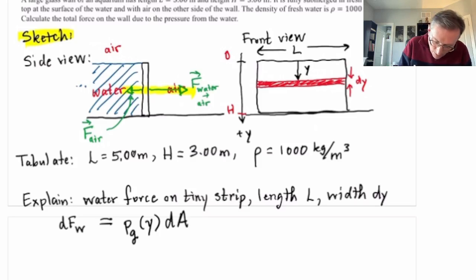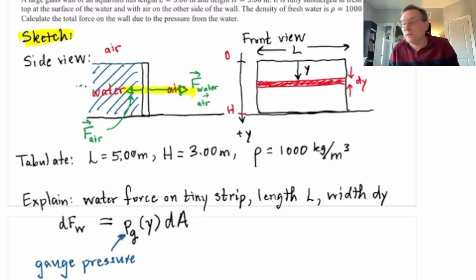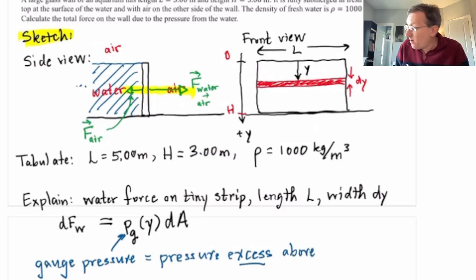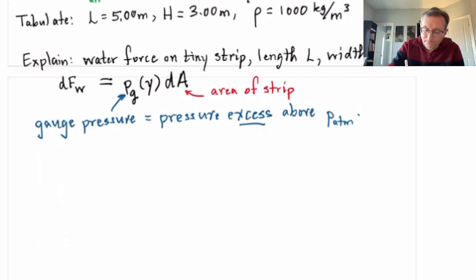Now I need to say some things about that. So that notation p_g is called the gauge pressure. You can think of that as the pressure excess above atmospheric. And of course, the dA is the area of that tiny strip that I've drawn in red. Now, how do I think about this gauge pressure from the water? Well, here's what we know about calculating pressure with depth in a fluid. This is from Chapter 14. The so-called absolute pressure in the water as a function of y